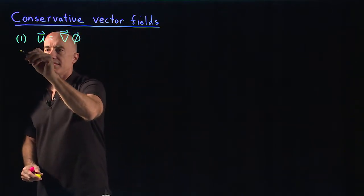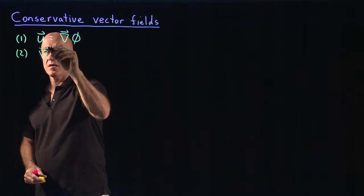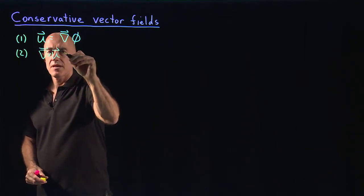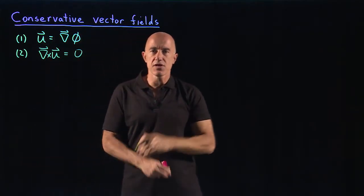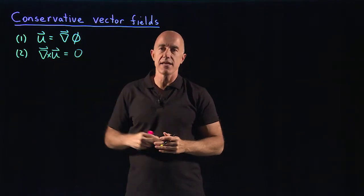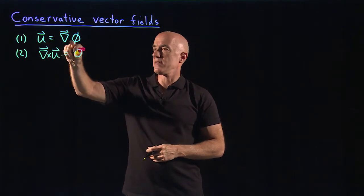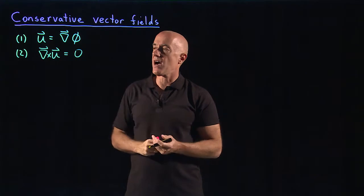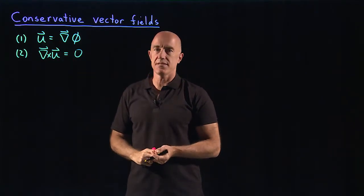A conservative vector field will be a vector field that satisfies one of four conditions — all of them are equivalent. The first condition is that the vector field can be written as the gradient of some scalar field. The second condition is that the curl of the vector field is equal to zero, because we've already proved the theorem that the curl of a gradient is equal to zero. So if u can be written as the gradient of a potential phi, then del cross u has to be zero.